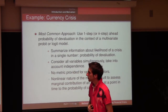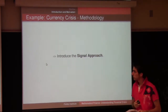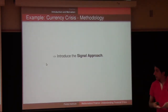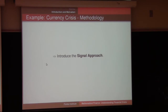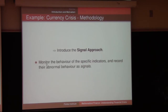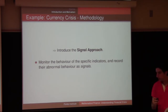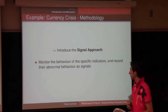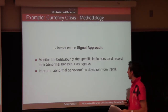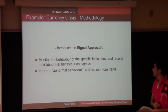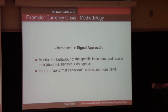So we're going to use a very different approach. We're going to introduce a signal approach — a much easier approach. We're going to monitor the behavior of specific indicators and record the abnormal behavior as signals. If there's something bad or wrong happening to an indicator, that is what we call a signal.